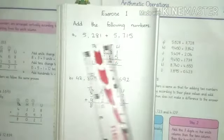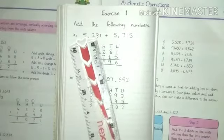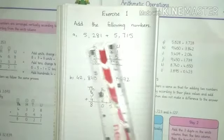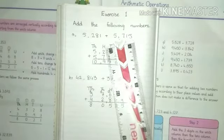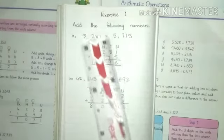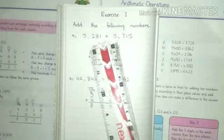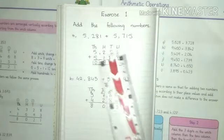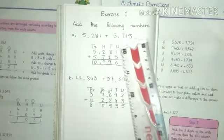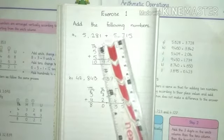As our first question is 5,281, 5,715, these both numbers we will add. So firstly we will write place values means unit, tens, hundred and thousand.